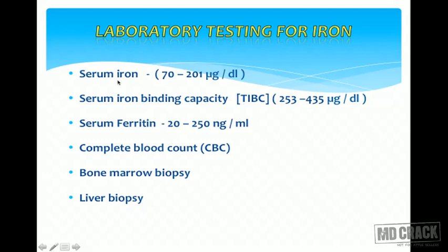Serum iron, serum TIBC, and serum ferritin estimation are much more important than bone marrow estimation for diagnosing iron deficiency anemia. Bone marrow aspiration and biopsy are invasive and painful — simple serum iron, TIBC, and ferritin estimation is sufficient to diagnose iron deficiency anemia. Bone marrow is only indicated if you specifically want to assess iron content using the Prussian blue iron reaction.